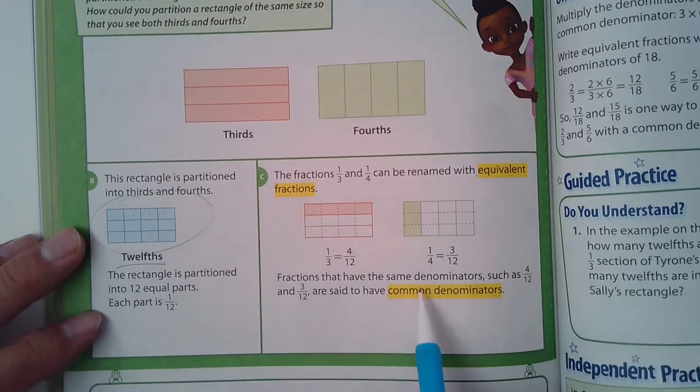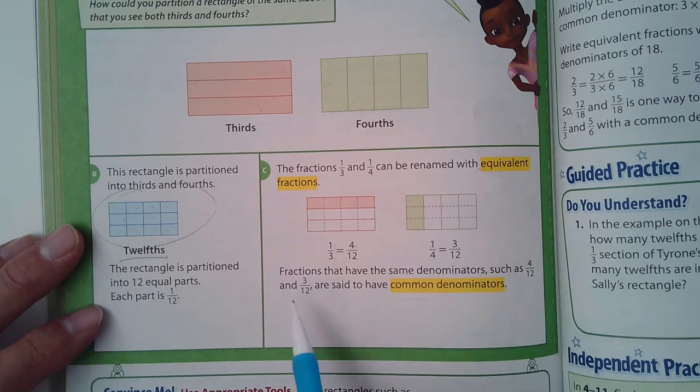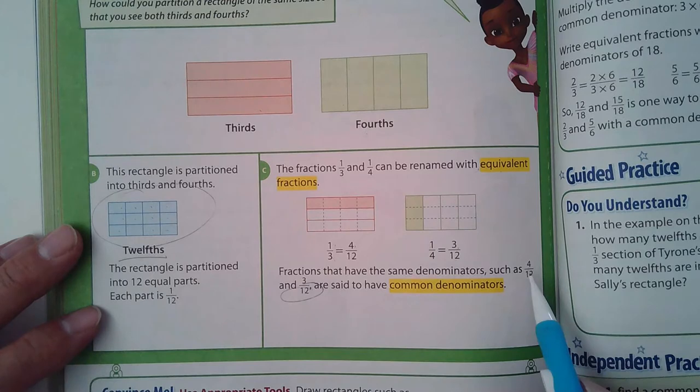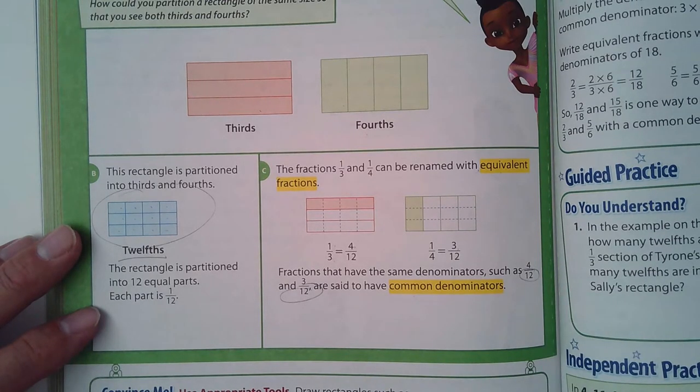So fractions that have the same denominators, such as four-twelfths and three-twelfths, are said to have common denominators when the denominator, the bottom part—twelve—when those are the same.